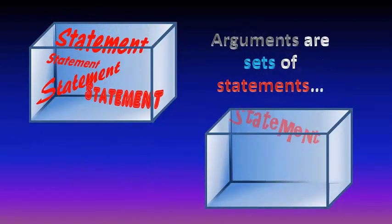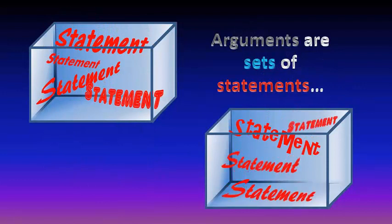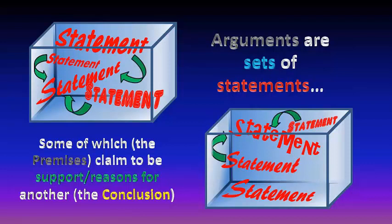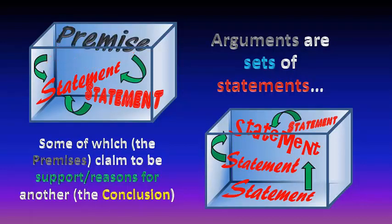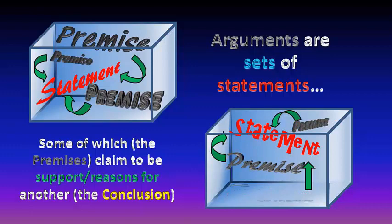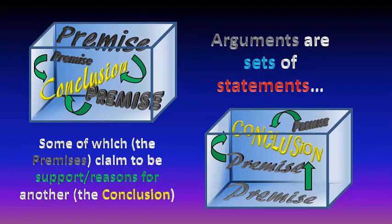An argument is a set of statements — one statement by itself never constitutes an argument. The unique thing about these sets of statements is this: some of those statements, called the premises, claim to be support or reasons for another in the batch. So you get these sorts of relationships of evidential support holding between statements. The statements that give evidence are called the premises, and the statements that receive the support from the premises are called the conclusion.